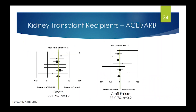Transplant recipients were also a key subgroup of interest. A meta-analysis by Swapnil Hiramath of eight studies including about 1,500 kidney transplant recipients looked at ACE inhibitors or ARBs compared with controls. For death from any cause, there was no signal — relative risk 0.96, p-value 0.9. For graft failure, the relative risk was 0.76 but was non-significant with a p-value of 0.2.